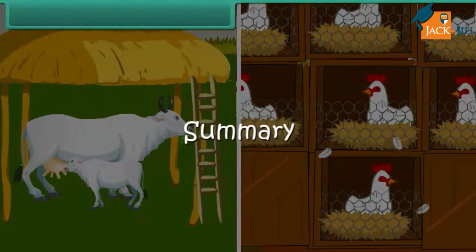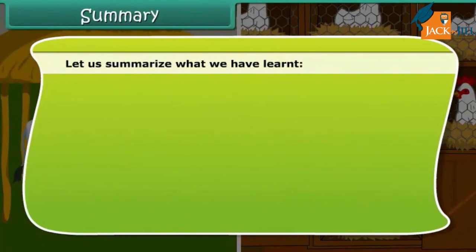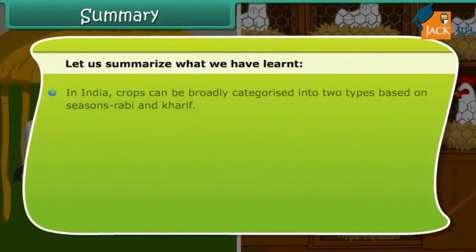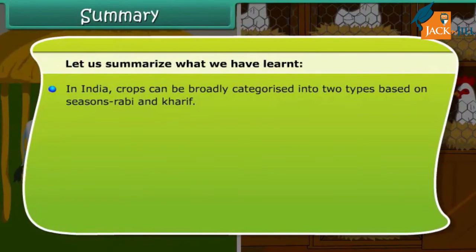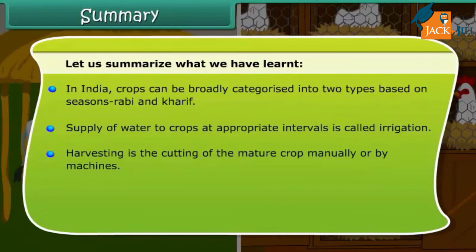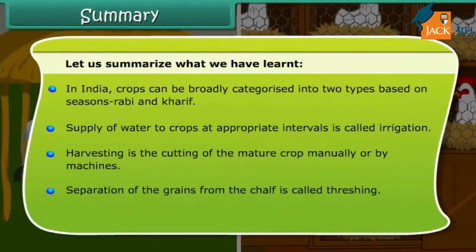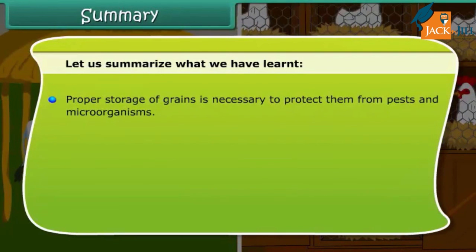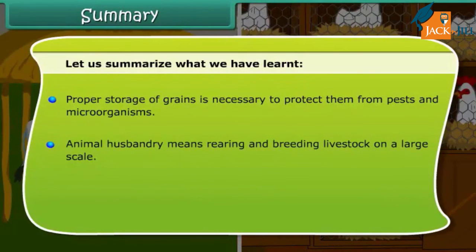In summary: In India, crops are broadly categorized into two types based on seasons — Rabi and Kharif. Supply of water to crops at appropriate intervals is called irrigation. Harvesting is the cutting of the mature crop manually or by machines. Separation of grains from the chaff is called threshing. Proper storage of grains is necessary to protect them from pests and microorganisms. Animal husbandry means rearing and breeding livestock on a large scale.